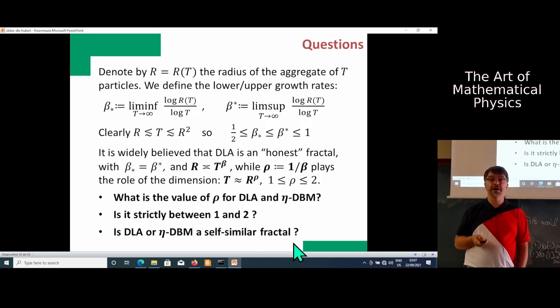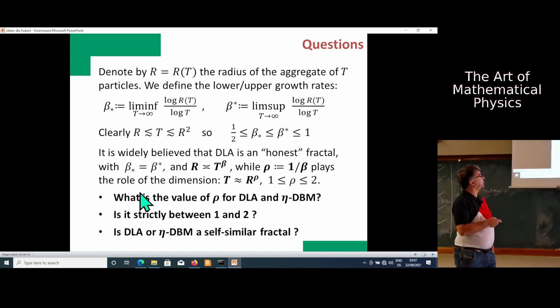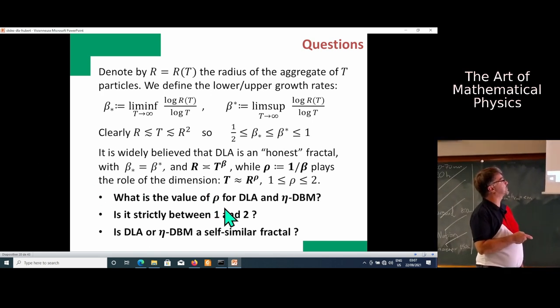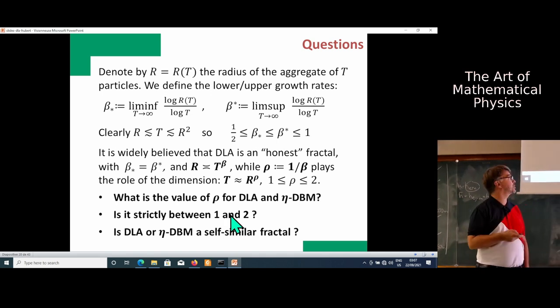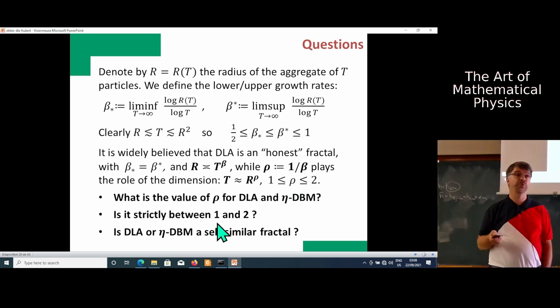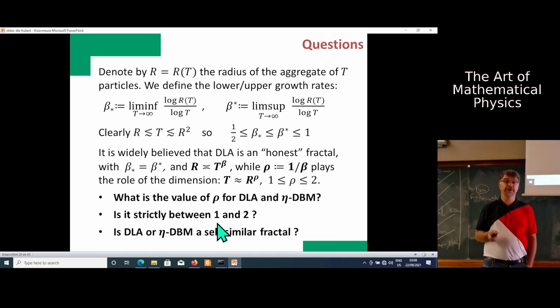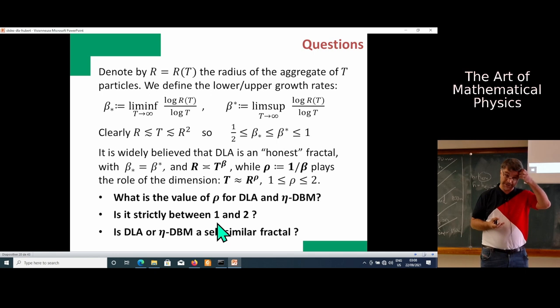What kind of questions can you ask? What is the value of dimension rho? Strictly speaking, this thing a priori doesn't have dimension. You can define upper and lower rate of growth. If you drop all the limits, the radius of every aggregate is number of particles to some power beta, or number of particles is radius to some power rho, where rho is reciprocal of beta. Rho plays the role of dimension between one and two. Is it an honest fractal? Is it strictly between one and two? Is it self-similar?